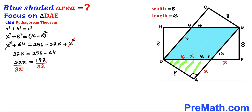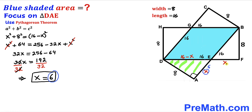Dividing both sides by 32 to isolate X, we get X = 6 units. So AE = 6 and EF = 6. The segment DE becomes 16 minus 6 = 10 units.